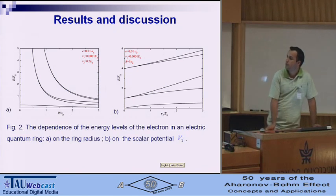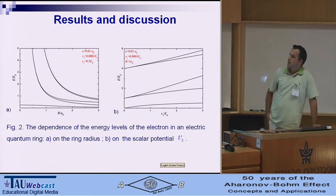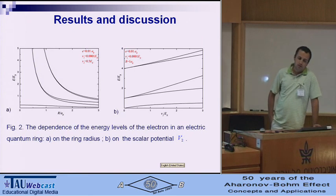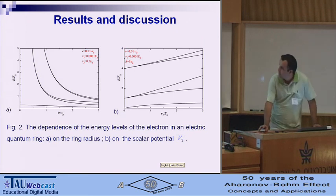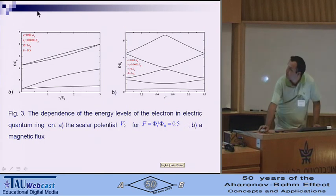So the results are these two. This is the result for the standard electric Aharonov-Bohm ring case, where I see the lifting of the degeneracy of the levels coming from the sign of the orbital angular momentum.